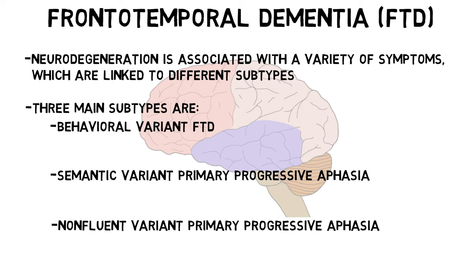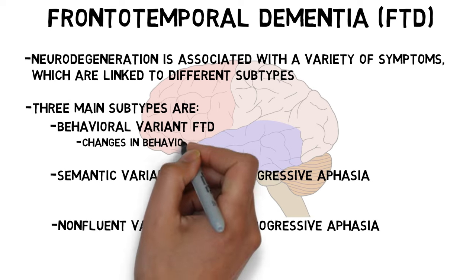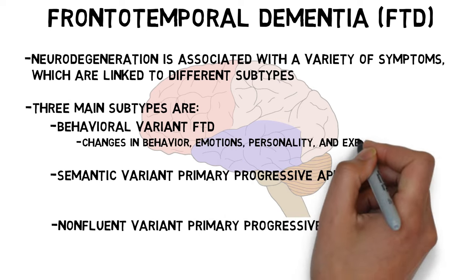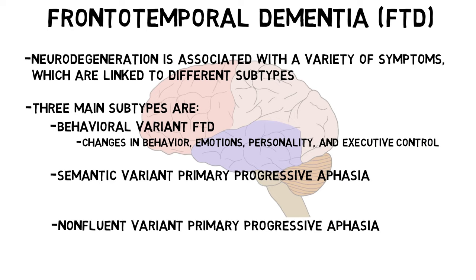In behavioral variant FTD, patients display a variety of changes in behavior, emotions, personality, and executive control. For example, they may exhibit compulsive behavior, apathy, and/or socially inappropriate behavior.